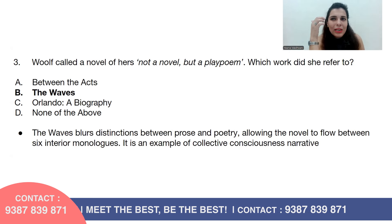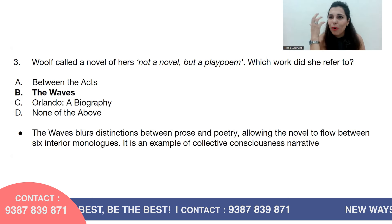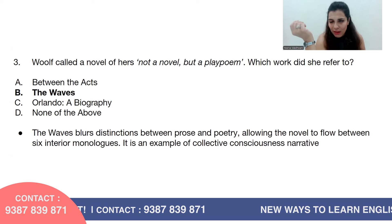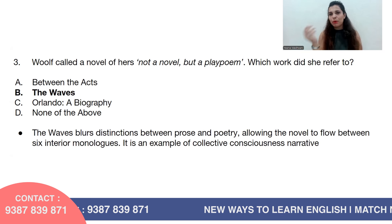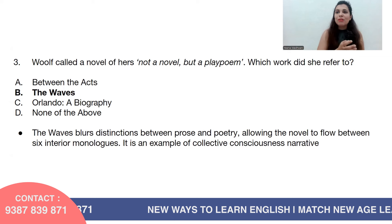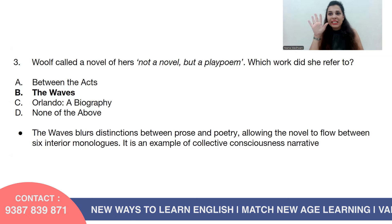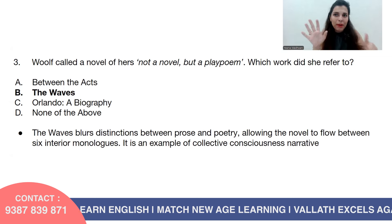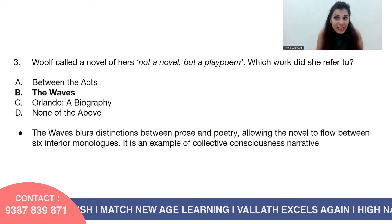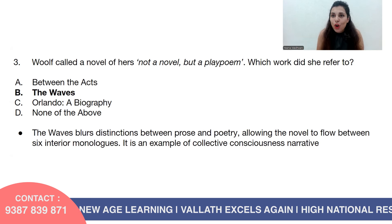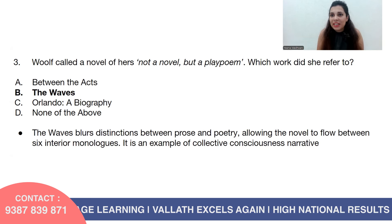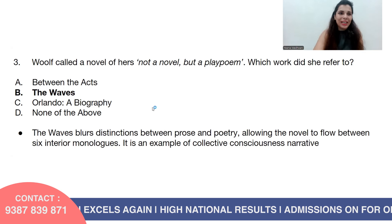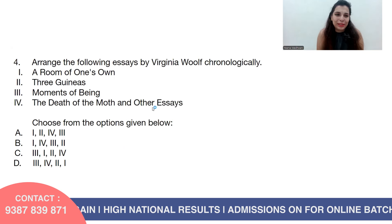The Waves talks about the mental makeup and turmoil of six characters. It blurs the distinction between prose and poetry, allowing the novel to flow between six interior monologues. The lives of six people are discussed, and it is an example of a collective consciousness narrative.